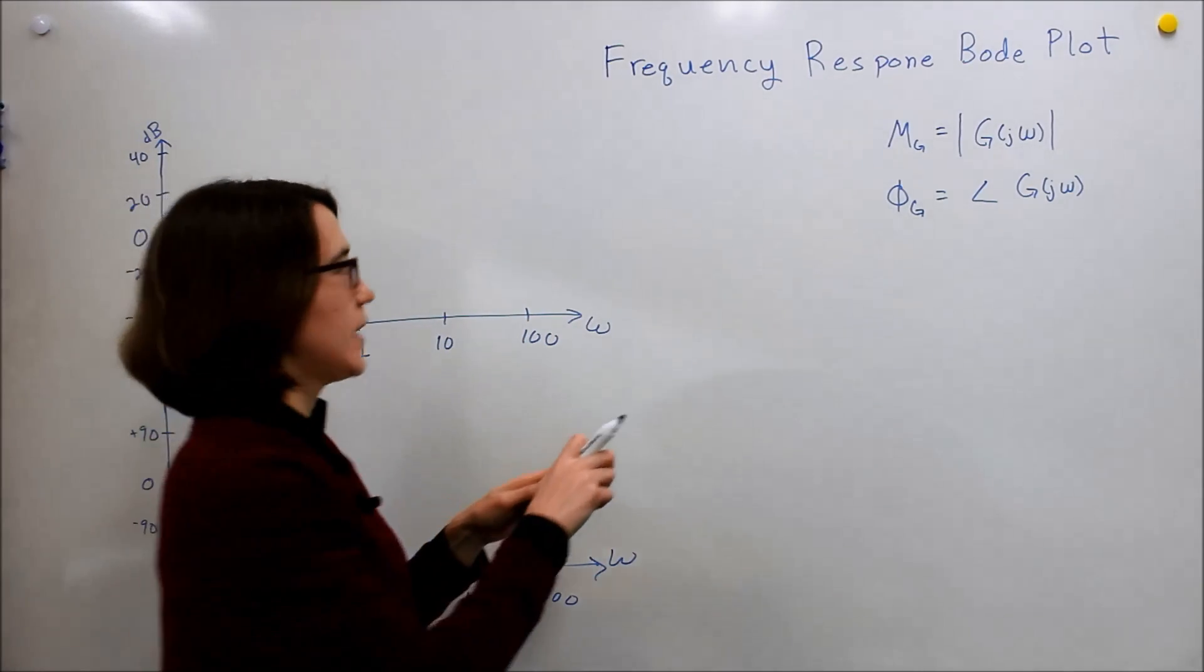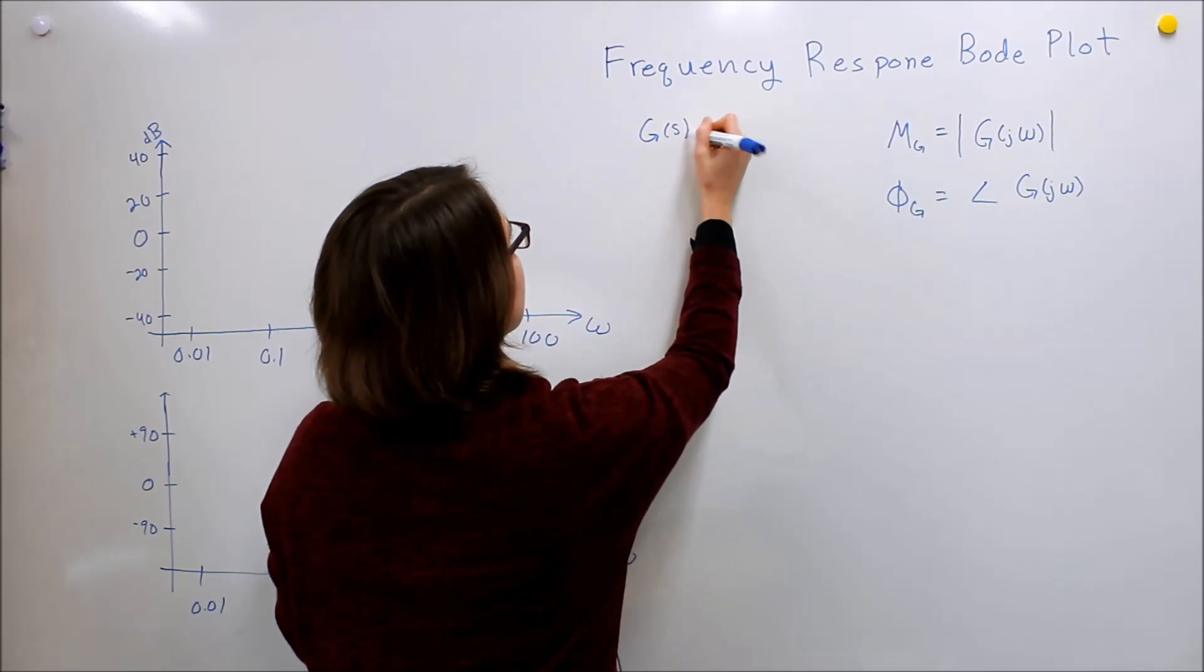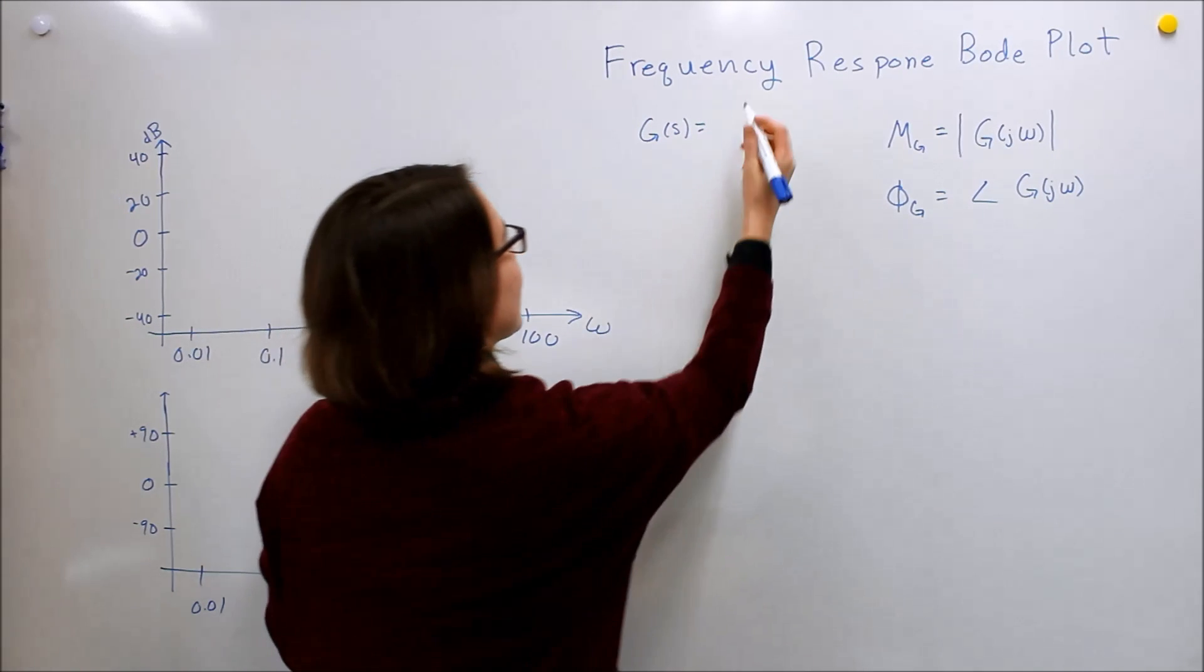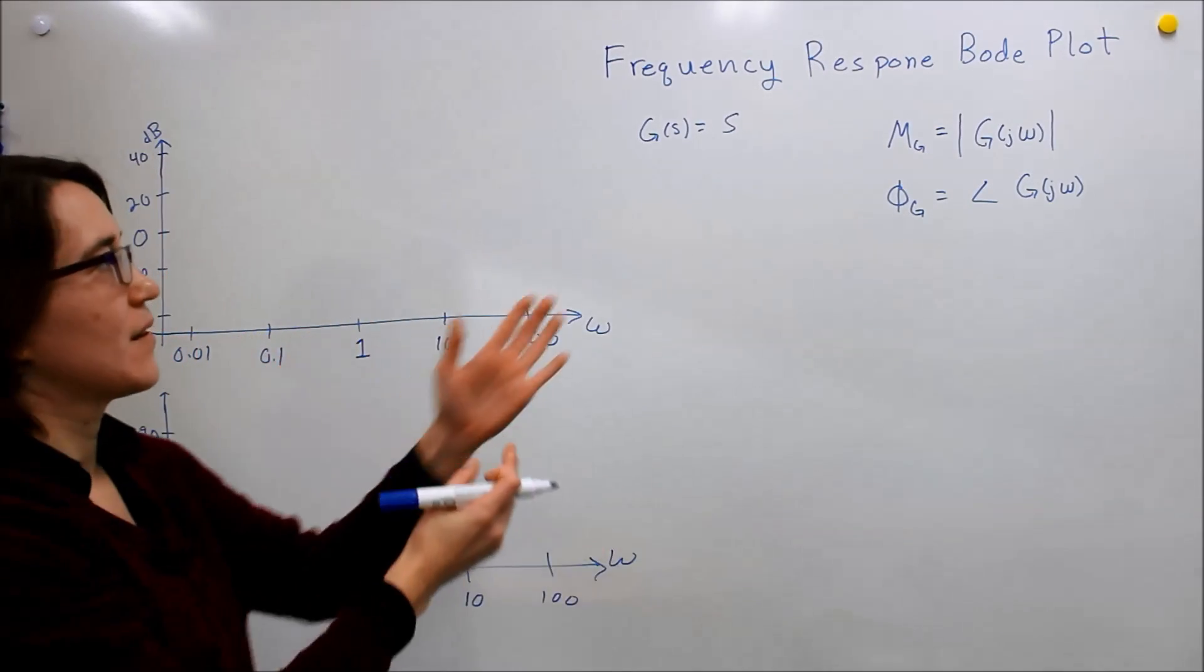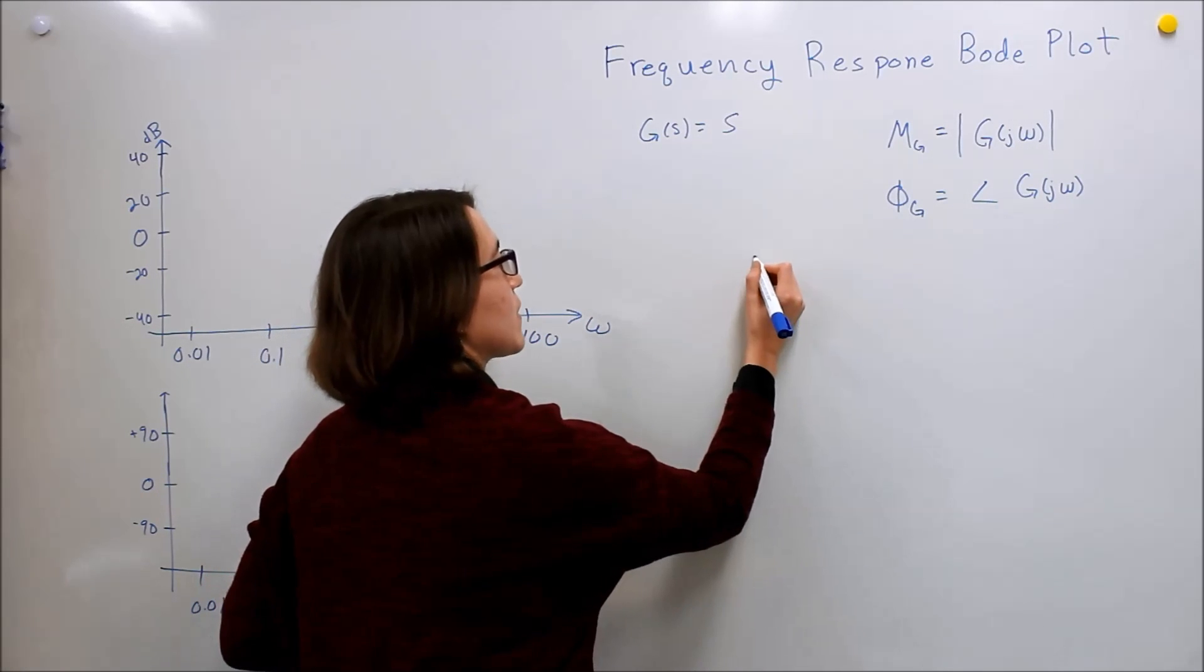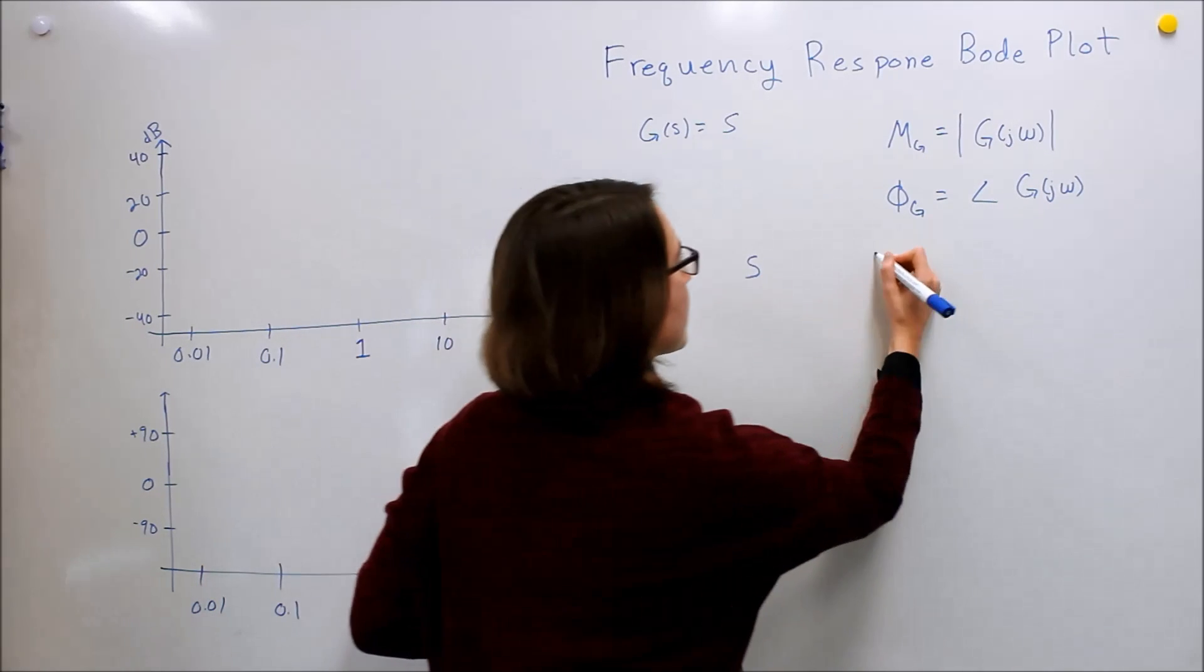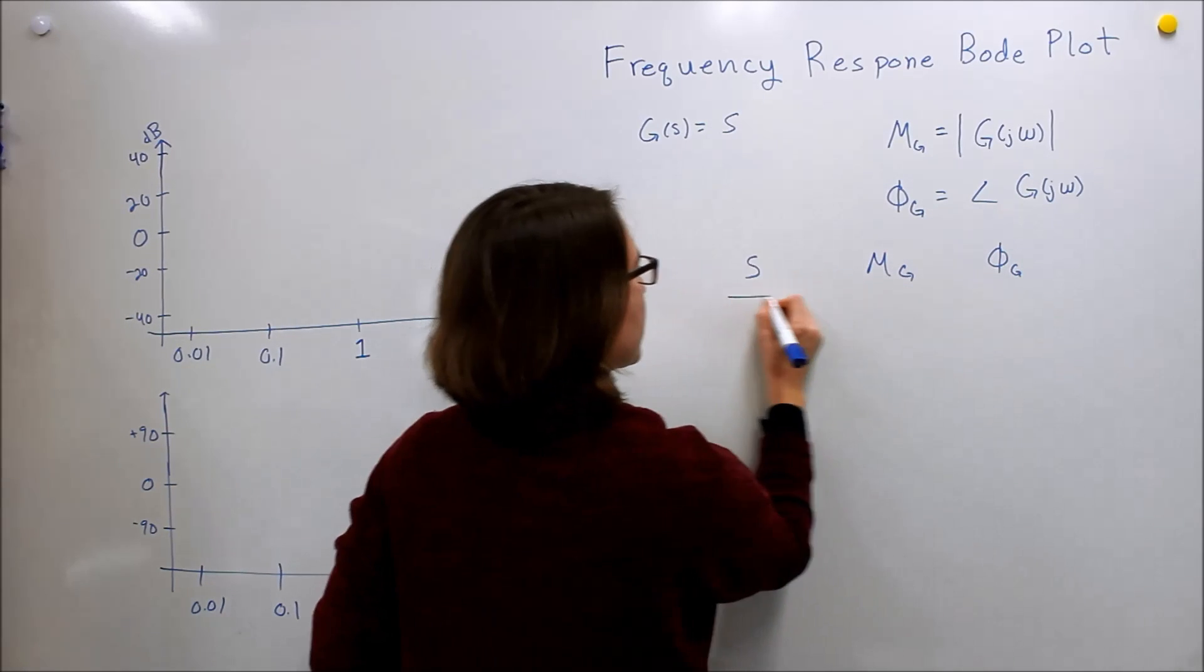We're going to take an example G(S), a very simple example - just S. We're going to take various test points of S and look at how it affects the magnitude and phase. So we'll make a table here.